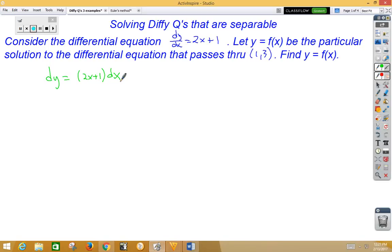After you separate, the next thing you want to do is integrate both sides. So if we integrate both sides, integrating a 1 dy would give us a y. Integrating 2x plus 1 would give us x squared plus x plus c.